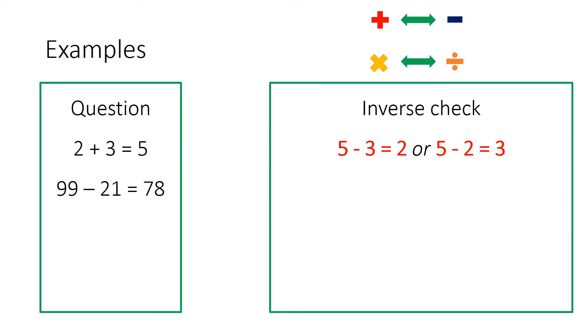Next one, if we have 99 take away 21 and if we've worked it out to be 78, because we've done a subtraction here the inverse is addition. So again we're going to start with the answer and do an addition and hope we get back to the original number, which we do.